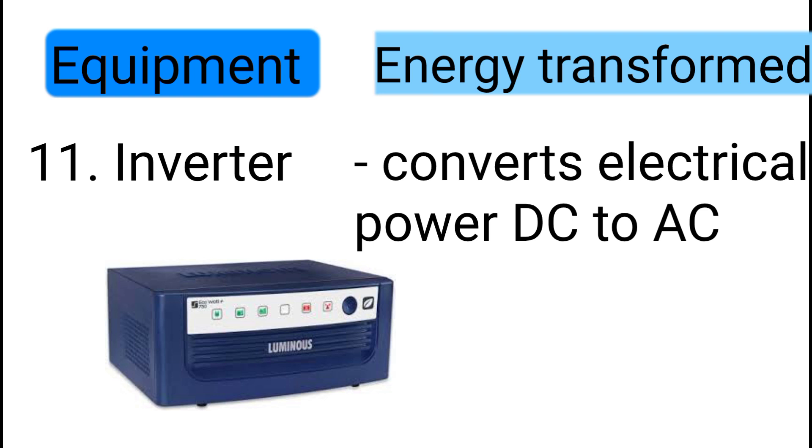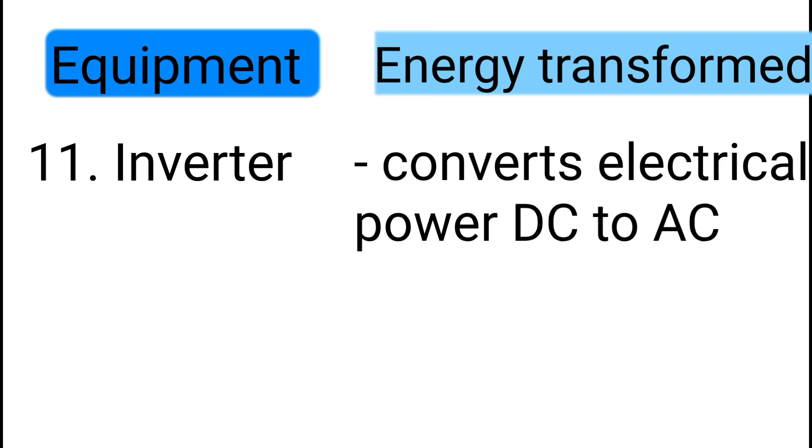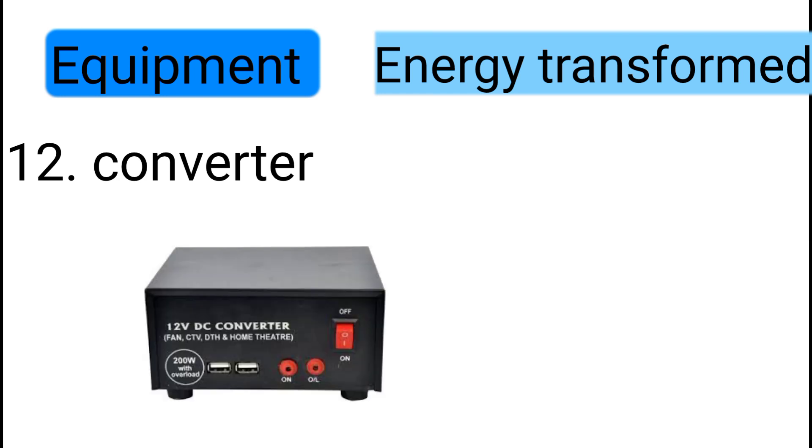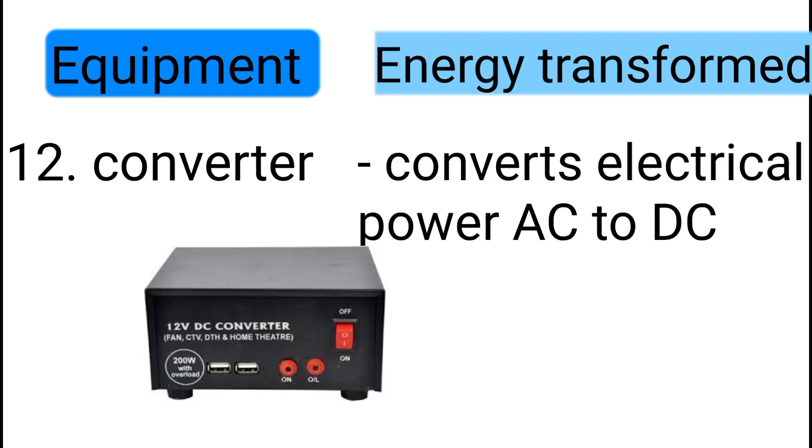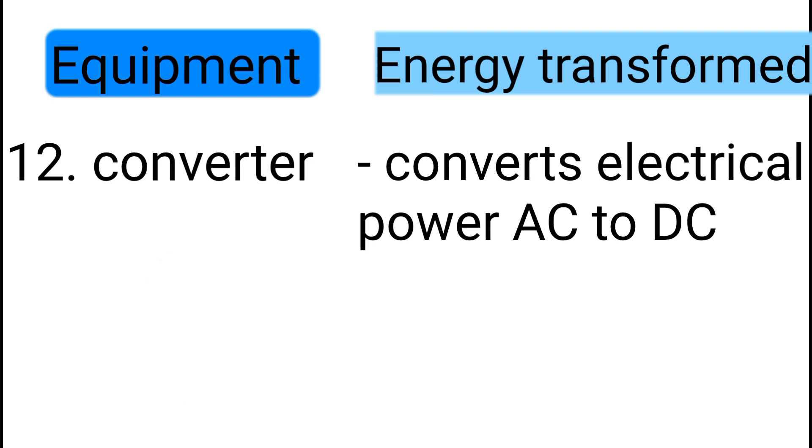Number eleven: inverter converts electrical power from DC into AC. Converter converts electrical power from AC to DC.